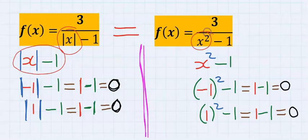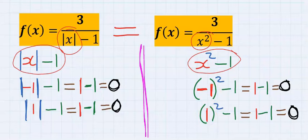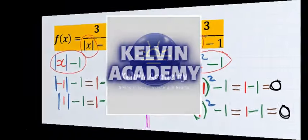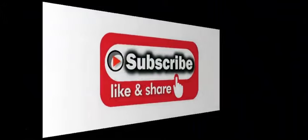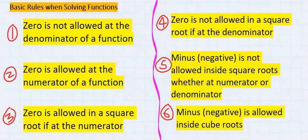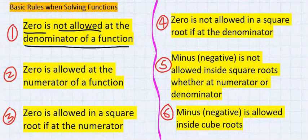Hence we are going to get zero again at the denominator. If absolute value is replaced with x squared at the denominator, we are going to have the same problem, because both minus one and one squared still give you one minus one, which is zero. Ensure that the minus is enclosed in a bracket.